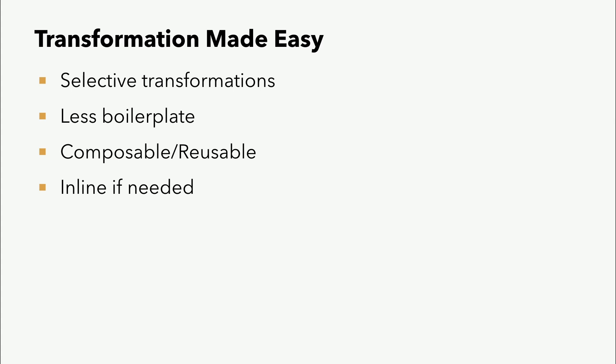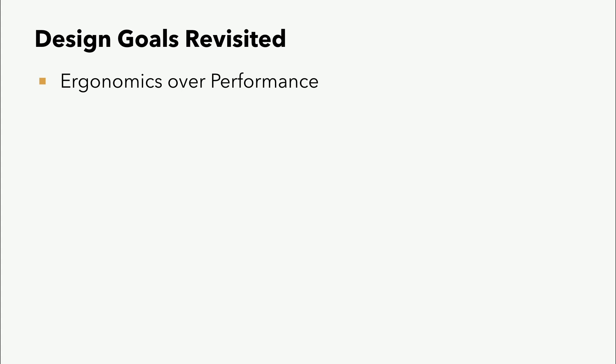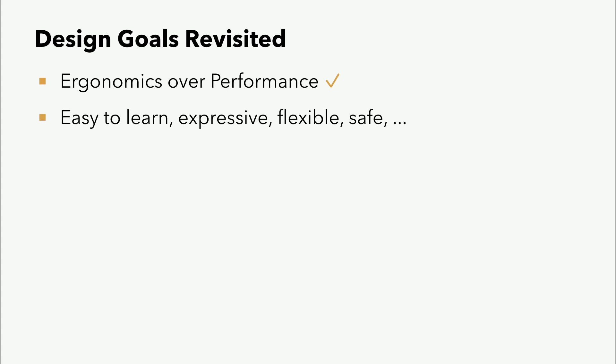Das sind eigentlich auch schon die Hauptfeatures der API, weswegen ich jetzt auch schon zu einem Punkt kommen möchte: Hat die API das Ziel erreicht, das sie sich gesteckt hat? Fangen wir mal an, die Design Goals nochmal anzuschauen. Benutzerfreundlichkeit über Performance – meiner Meinung nach klarer Gewinn, auf jeden Fall im Vergleich zu dem Code von ASM. Einfach zu lernen, ausdrucksstark, flexibel und sicher: das Easy-to-Learn würde ich jetzt nicht unbedingt unterschreiben wollen bei manchen Sachen, aber sie ist trotzdem, dadurch dass sie gleichförmig auf allen Ebenen funktioniert, trotzdem einfacher zu verstehen. Und sie haben es geschafft, durch die Konstanten-API und durch die Parameterslots, sie um einiges sicherer zu machen, als mit Strings um sich zu werfen in ASM. Die Performance: da komme ich als nächstes gleich drauf ein, aber meiner Meinung nach ist sie gut. Sonst würden sie es nicht machen. Das JDK würde seinen eigenen Bytecode mit einer API generieren, die zu langsam ist – das würde einfach gar keinen Sinn ergeben.